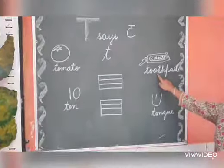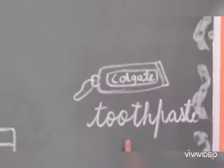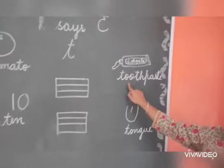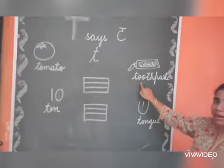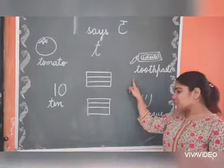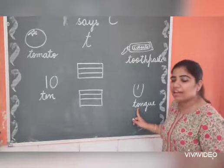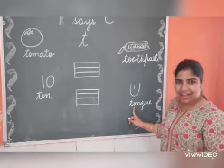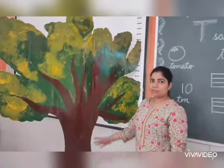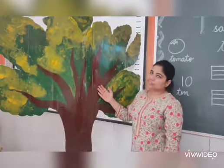Now you can see, this is Toothpaste. In the morning and in the night, you use a toothbrush to brush your teeth. And what do you apply on it? Toothpaste. T for Toothpaste. Show me your tongue, everyone. T for Toothpaste. Toothpaste is green in color.